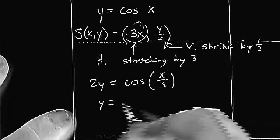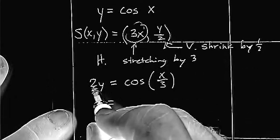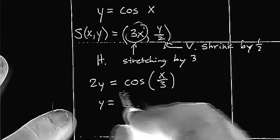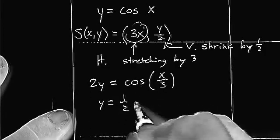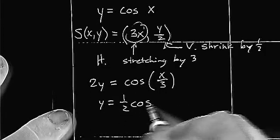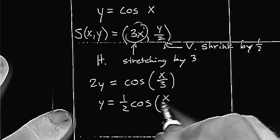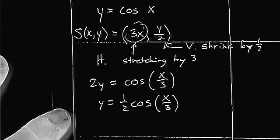We always solve for y, so in doing so, we would end up dividing by 2 or multiplying by 1 half, giving us that resulting equation.